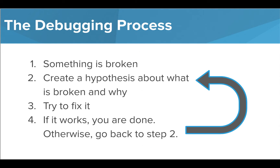The main process for debugging looks something like this. We see that something is broken in our code or the functionality of our program. We create a hypothesis about what could be broken and why. Then we try to fix the problem, and if it works, great, we're done! If not, we go back to step 2 and make a new hypothesis about what could be wrong. This process cycles through until our program works as intended.